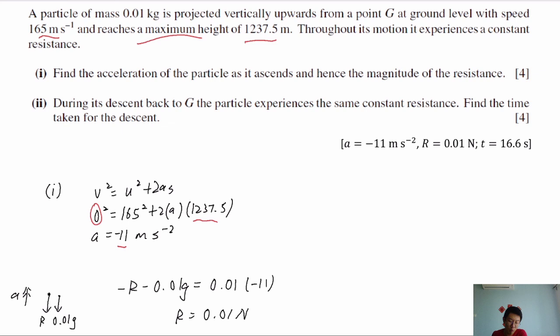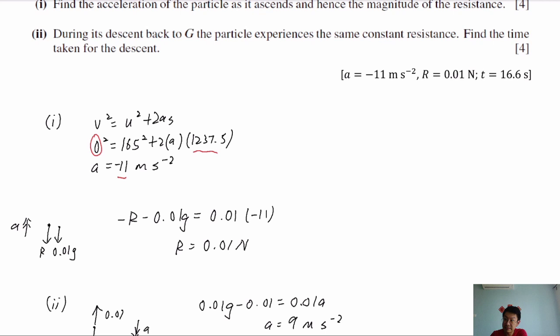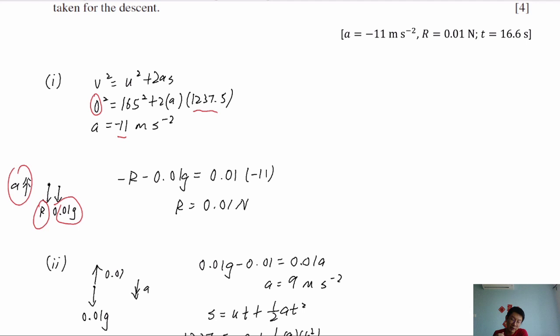Using V² = U² + 2AS with V = 0, U = 165, and S = 1373.5, the acceleration A = −11 m/s². Using this, and considering that both the weight 0.01G and the resistance R act in the opposite direction to the upward motion, applying F = MA with A = −11 gives the resistance R = 0.01 N.